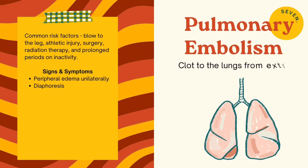Next is a pulmonary embolism, or PE for short. It is a clot to the lungs from an extremity. Common risk factors include a blow to the leg, athletic injury, surgery, radiation therapy, and prolonged periods of inactivity. Signs and symptoms include peripheral edema unilaterally and diaphoresis.